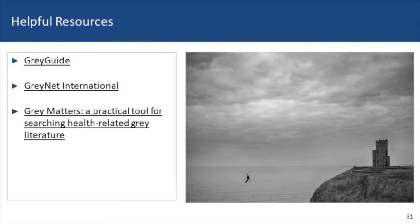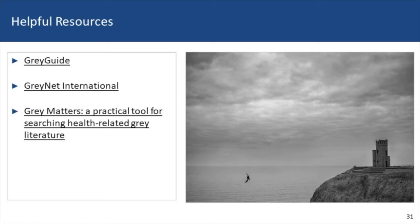That's a very general introduction to the area of gray literature — some understanding of the nuances of what it is and what it isn't, the different types and who produces them, and pointers to where you can find this information. Here are three helpful resources: the Gray Guide, GrayNet International, and for the medical area in particular, Gray Matters — a practical tool for searching for health-related gray literature.